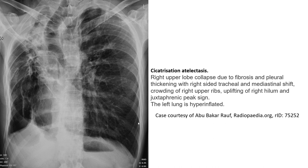In cicatrization atelectasis, right upper lobe collapse is seen due to fibrosis and pleural thickening with right-sided tracheal and mediastinal shift. There is cicatrization of the right upper lobe, uplifting of the right hilum, and ipsilateral phrenic peak. The left lung is hyperinflated.